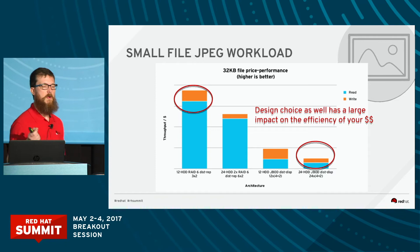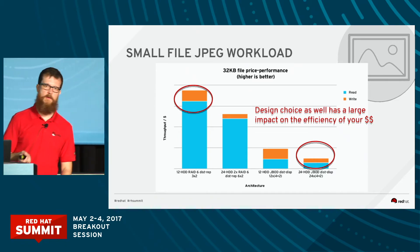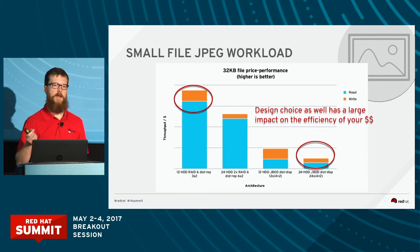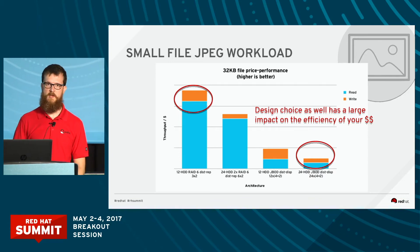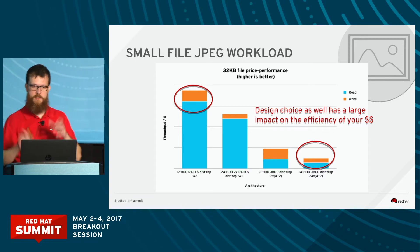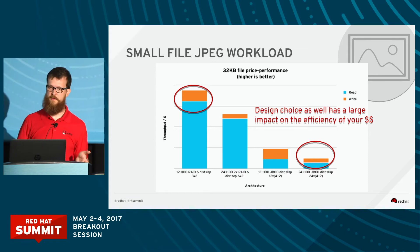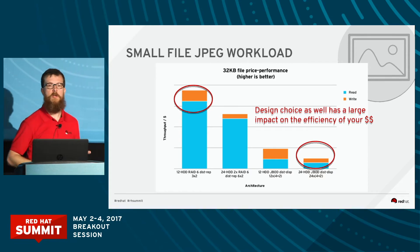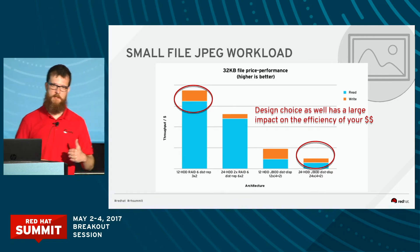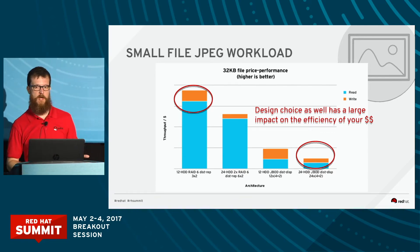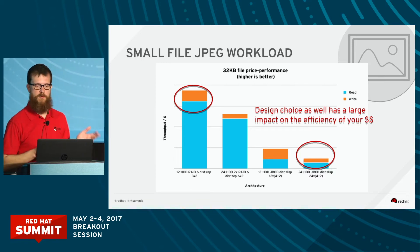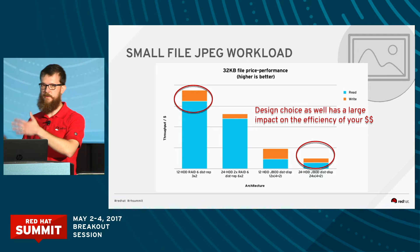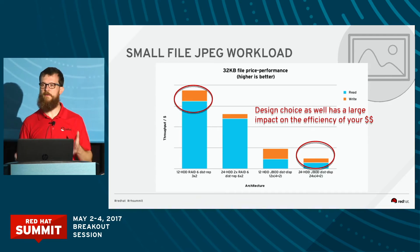What we actually have along the bottom are the two primary configurations: a distributed replicated volume and a distributed dispersed volume — dispersed is Gluster terminology for erasure coding. We look at the comparison between what we considered a standard density and a higher density system. The first of each two bars is a 12-disc system and the second is a 24-disc system in an analogous configuration. What you find is that if performance matters to you, your dollar is going to go a lot further if you invest in less dense systems. You'll also notice a dramatic difference in your dollar investment when you do the distributed replicated volume versus the dispersed volume.